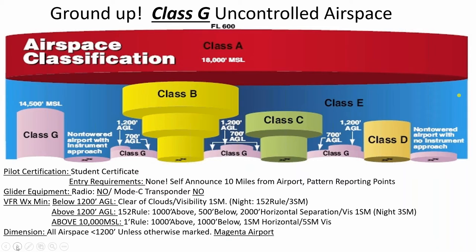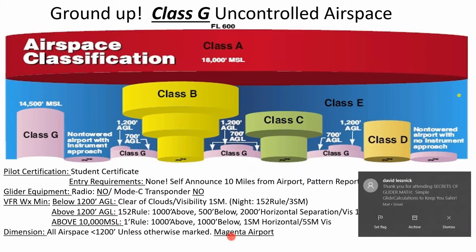Our airport at Hood River sits in Class G airspace. Class G is our only uncontrolled airspace — all other airspaces are controlled. Class G is generally all airspace below 1,200 feet unless otherwise marked. Airports in Class G — uncontrolled airports — are shown in magenta on the sectional chart.